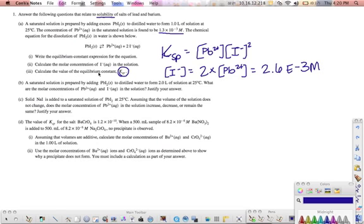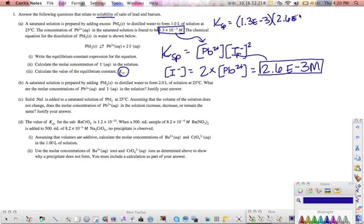And then calculate the value of the equilibrium constant. Here is the lead ion concentration, here is the iodine ion concentration. So we just simply plug those in to our equilibrium constant expression. Ksp is equal to, the lead was 1.3 times 10 to the negative 3, and iodine 2.6 times 10 to the negative 3, and that was squared because iodine is squared. And you plug this into your calculator and you end up with 8.8 times 10 to the negative 9.